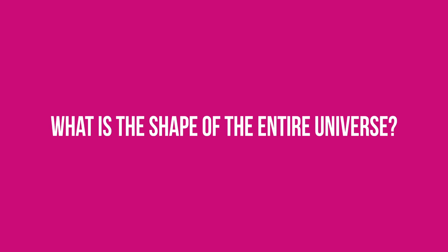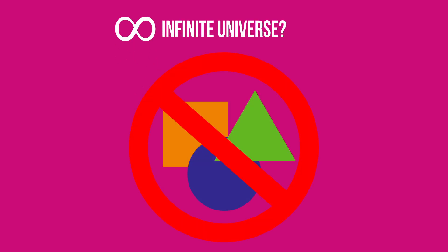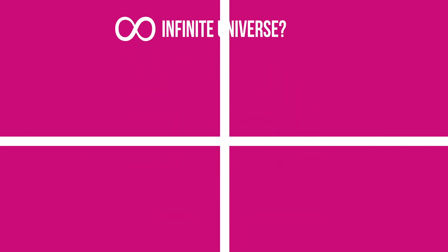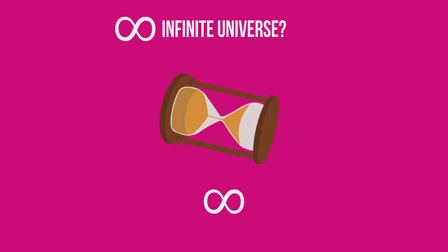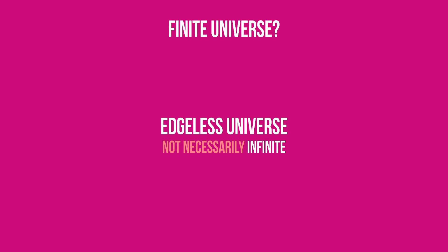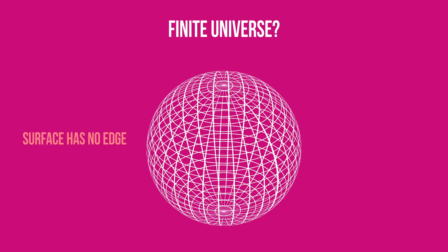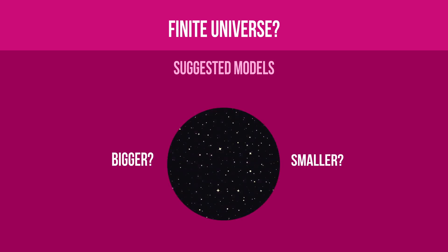But what is the shape of the entire universe? The limits of the entire universe are still unknown, and may remain so forever, as it appears to be edgeless. If the universe is indeed infinite, then it doesn't really have any shape — it just goes to infinity and contains an infinite amount of spacetime. However, an edgeless universe doesn't necessarily mean that it is infinite, as the universe can contain a finite amount of matter but have no edge, the same way the surface of a sphere has no edge but is finite. As of today, multiple shapes have been suggested for an edgeless yet finite universe, that could be bigger or even smaller than the observable universe.